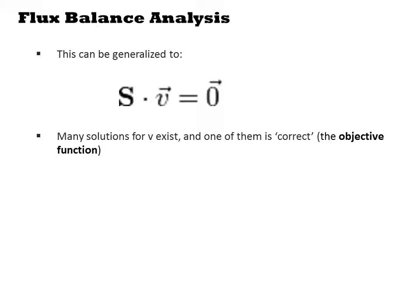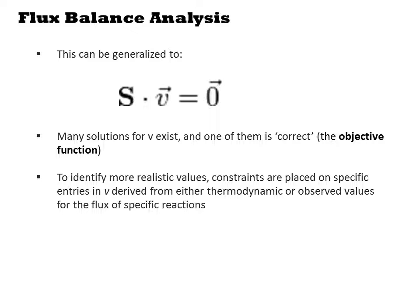Many solutions for V exist, and one of them is correct. This real value is called the objective function. Unfortunately, there are many solutions to V that would satisfy any S. Thus, we cannot immediately calculate the real one. To identify more realistic values of the objective function, constraints are placed on specific entries in V derived from either thermodynamic or observed values for the flux of specific reactions.